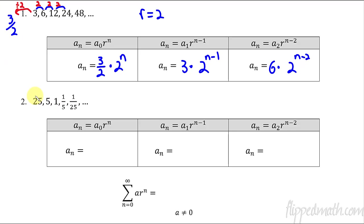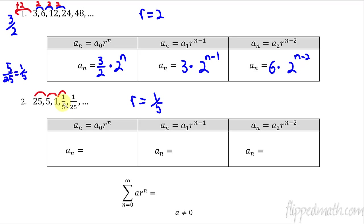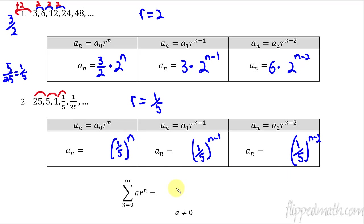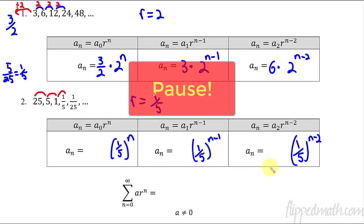Here's another example where the numbers are getting smaller: 25, 5, 1... This geometric sequence is going in the decreasing direction. To find r, you divide a term by the previous term: 5 over 25 equals 1 fifth. So r is 1 fifth for all of these. Pause the video and try to come up with the leading coefficients for the rules. You should have come up with those answers.